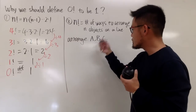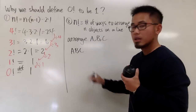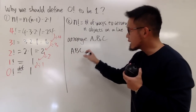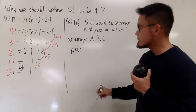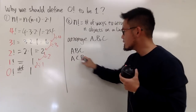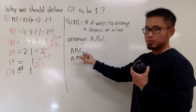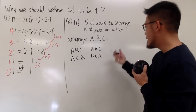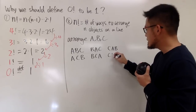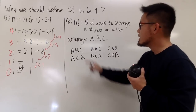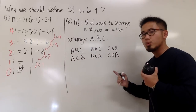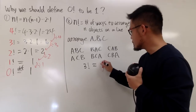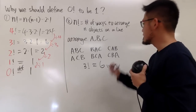Let me show all arrangements quickly. If A goes first: A, B, C and A, C, B. If B goes first: B, A, C and B, C, A. If C goes first: C, A, B and C, B, A. That's it — 6 ways to arrange 3 things. So 3 factorial equals 6, giving us 6 arrangements total.